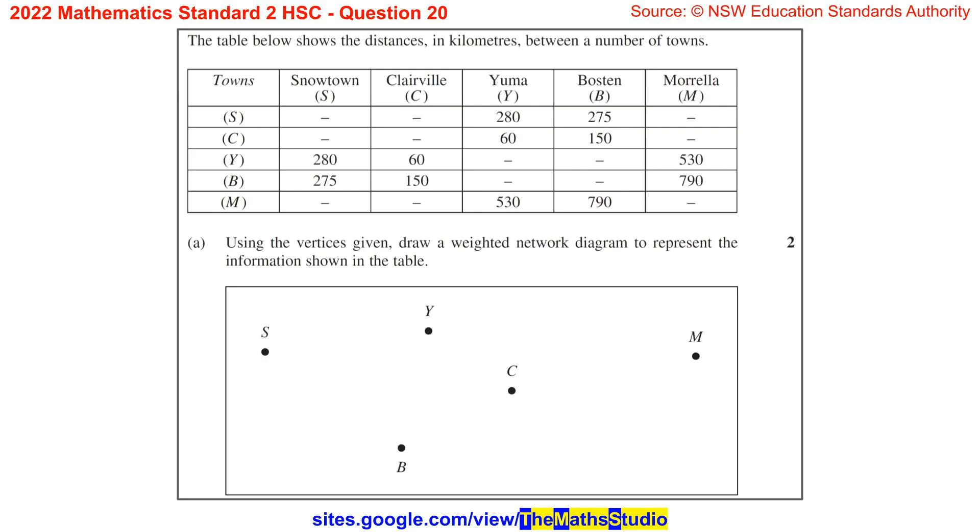Question 20. The table below shows the distances, in kilometers, between a number of towns. Part A. Using the vertices given, draw a weighted network diagram to represent the information shown in the table.